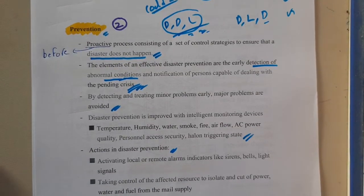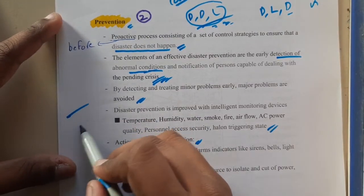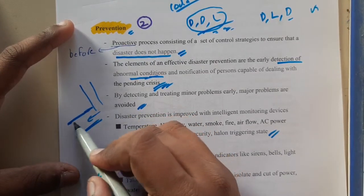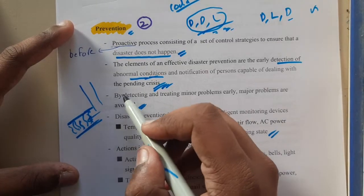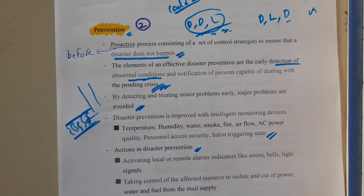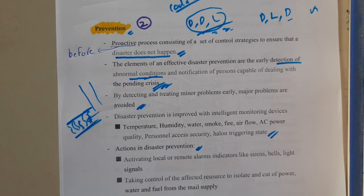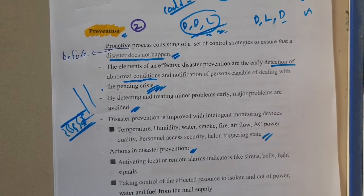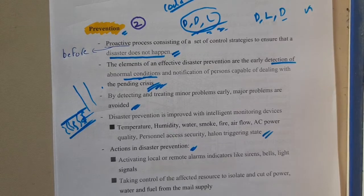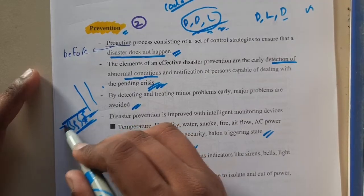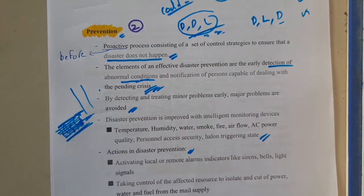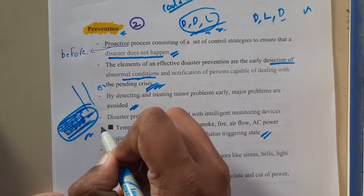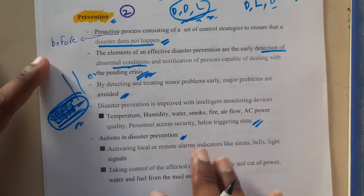By detecting and testing minor problems early, major problems can be avoided. For example, assume there is a coal mine or gold mine where multiple people are working. If you establish earthquake sensors or rock sensors indicating the falling of something, and there is an indication of an issue even tens or hundreds of kilometers away, you should automatically evacuate, because there is a high chance of collapse. A small issue elsewhere could become a huge issue here.